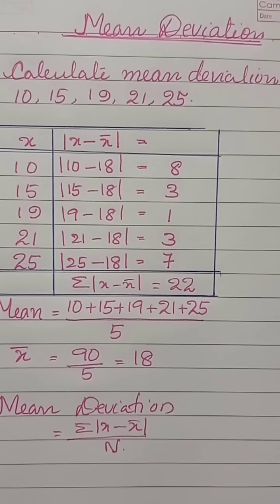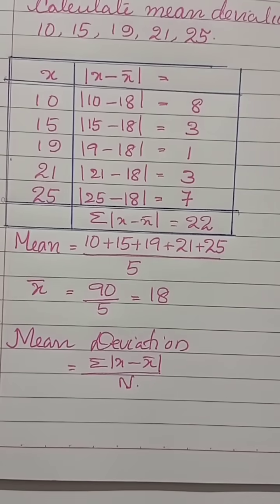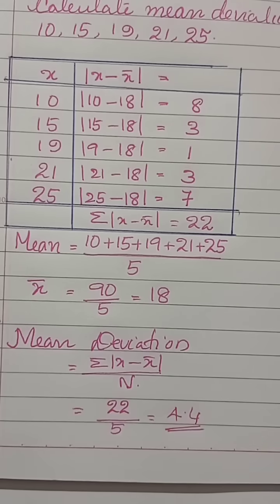Now the mean deviation is equal to sigma x minus x bar divided by n. It is equal to 22 by 5 is equal to 4.4. Number of times is 5.